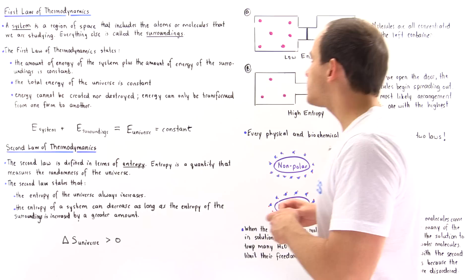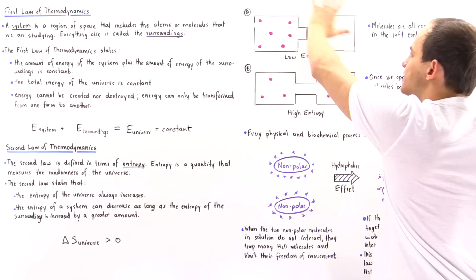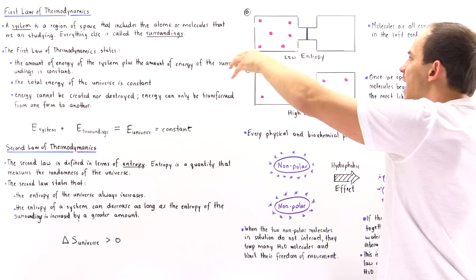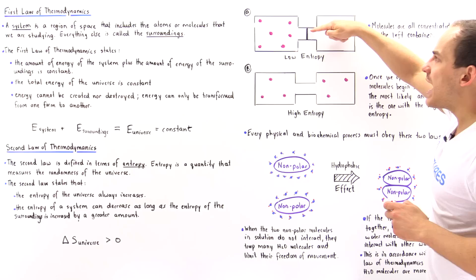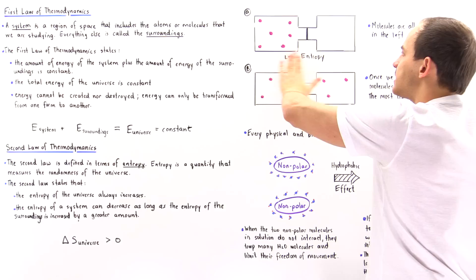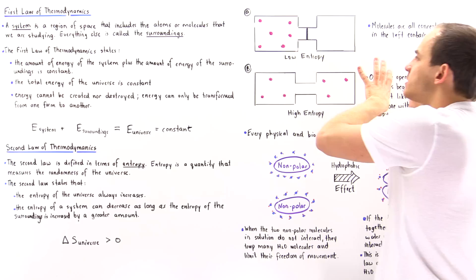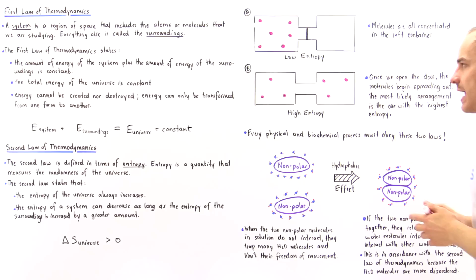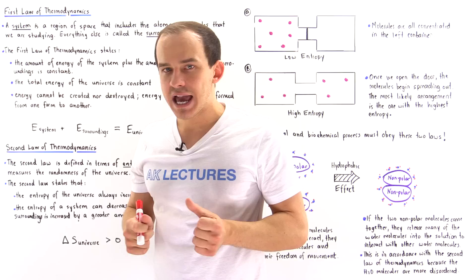What exactly do we mean by entropy? Let's look at diagram A and diagram B. In diagram A, this container is our system and the molecules inside are also part of our system. We have an artificial barrier that prevents the molecules on one side from going to the other side. All six molecules — each carrying a certain amount of energy — are localized and concentrated on the left side of our container. Now, as soon as we open that door, what exactly happens?